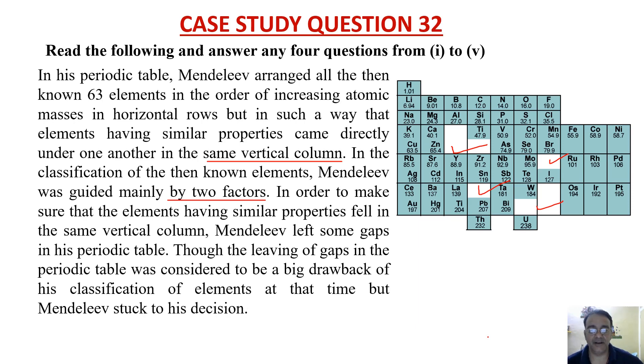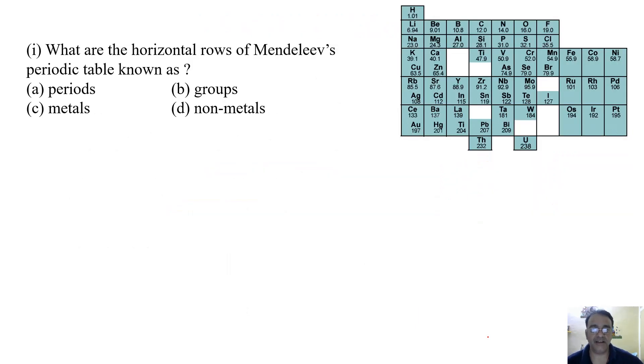What are the horizontal rows of Mendeleev's periodic table known as? Periods, groups, metals, non-metals. It is known as periods.